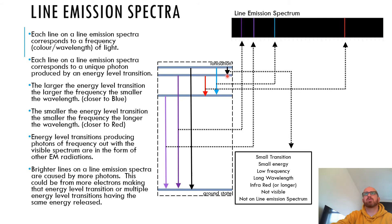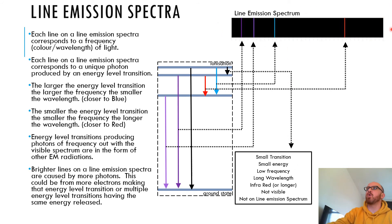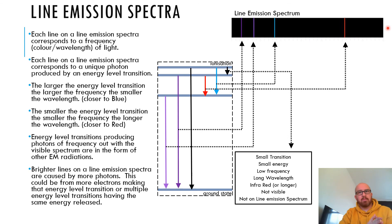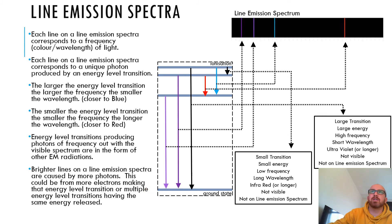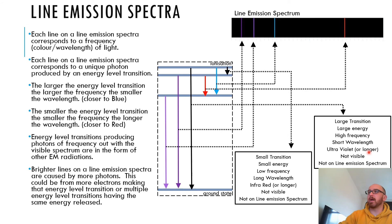The first black line corresponds to a very small transition — small energy, low frequency, long wavelength — longer than the visible spectrum, so it's infrared or beyond. It doesn't appear on the line emission spectrum; it would be somewhere beyond the red end. The last black line is the largest transition — large energy, high frequency, short wavelength — it could be ultraviolet or shorter. So it's not visible and doesn't appear on the line emission spectrum, but would be beyond the violet end.